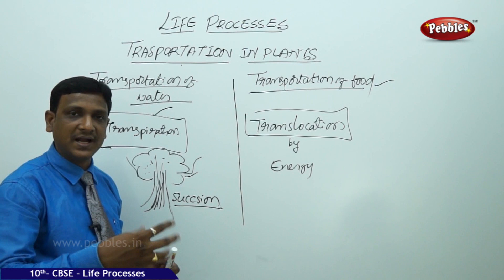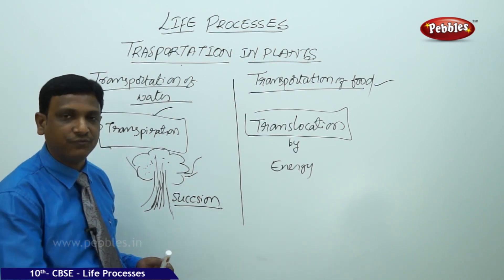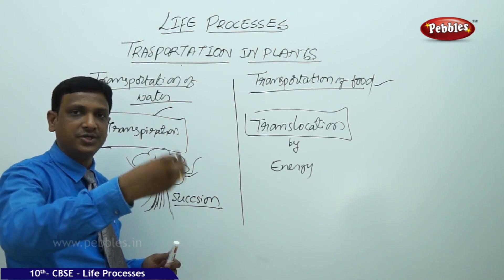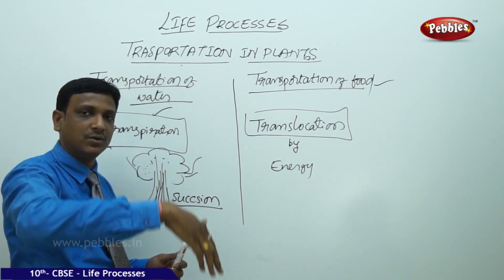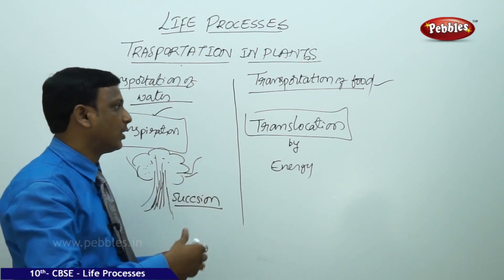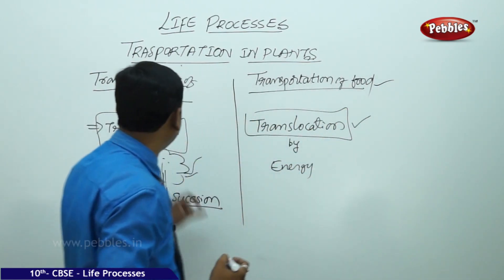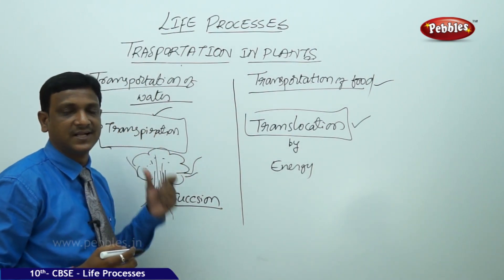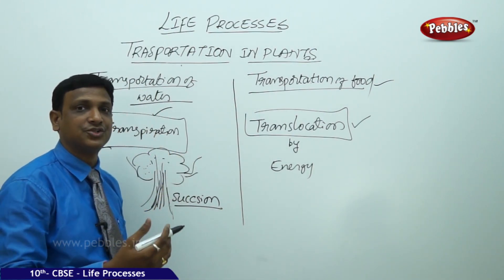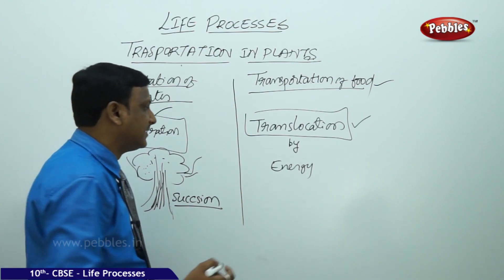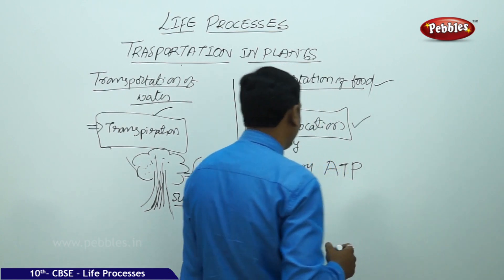Sometimes, when the plant is blooming, food is required in the bud part, so from the root the food should be transported upward to the bud. So sometimes food is transported downward, sometimes upward — this is called translocation. This cannot be done by simple physical forces. Energy has to be spent for transportation in the form of ATP.